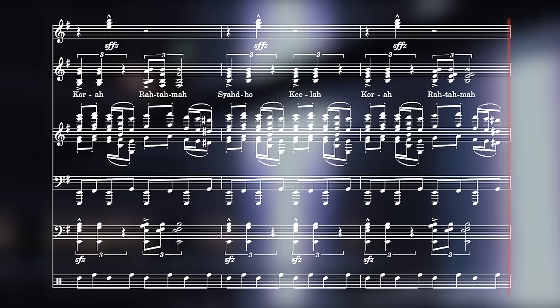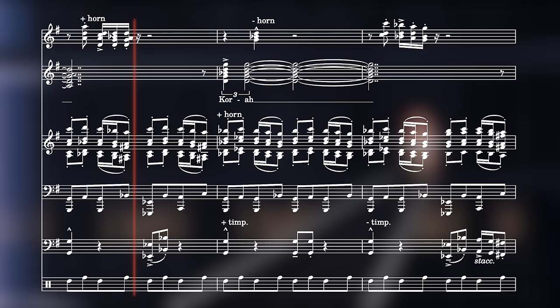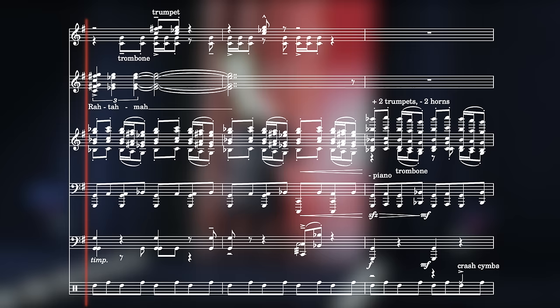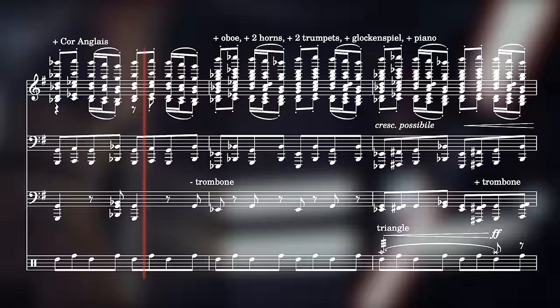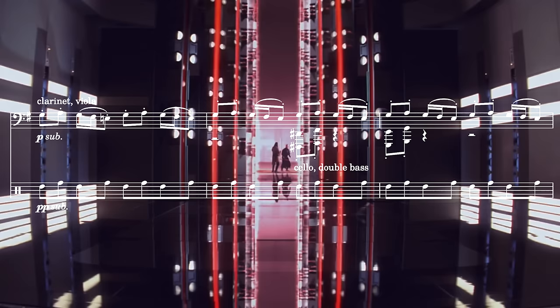After moving into G minor, parts of the ostinato start to appear in the horns, trumpets and trombones. This is an example of hocketing, where a melody is passed between different instruments whilst maintaining the structure of the musical line. The orchestra has seemingly ripped itself apart and needs to be reformed.